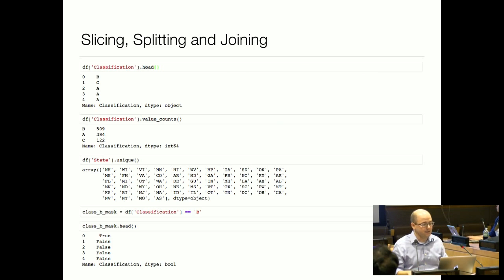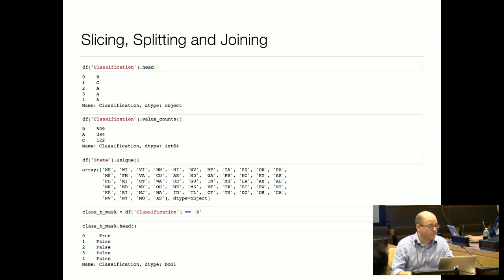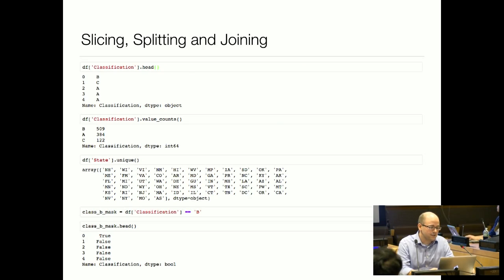One thing to know about Pandas is the DataFrame object is a two-dimensional indexed table. The other key object is a Series, which is just an indexed array. Anytime I want to look at a column of my DataFrame as a series, I can simply put the column name in brackets after the DataFrame name. One of the really useful methods on a Series is value_counts — you can see I've taken value_counts of my classification, which gives all unique values and the number of occurrences. The B value occurs 509 times. Another useful method is unique, which gives back an array with all unique values.